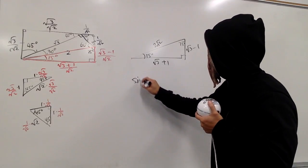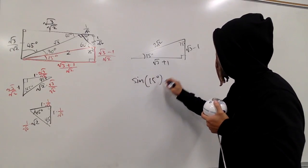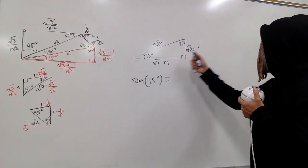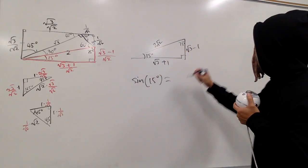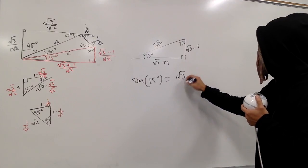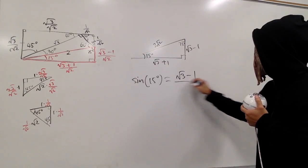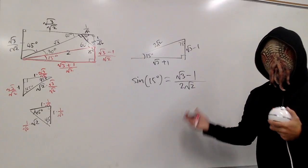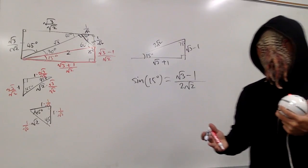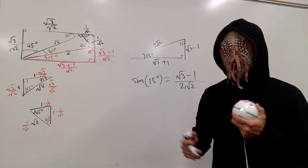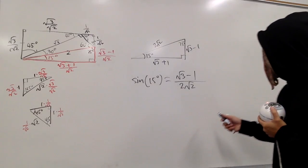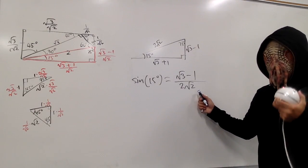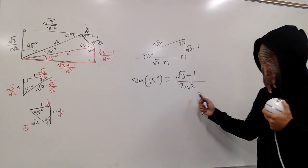For example, I can tell you guys what's the sine of 15 degrees. Here is the 15 degree angle. Opposite over hypotenuse, which is square root of 3 minus 1 over 2 square root of 2. If you're in pre-calc or trig, you have to rationalize the denominator, but if you've graduated from those classes, you don't have to.